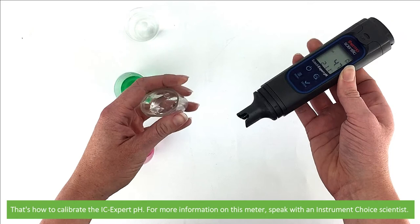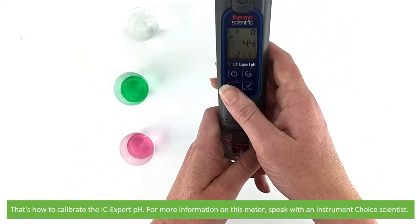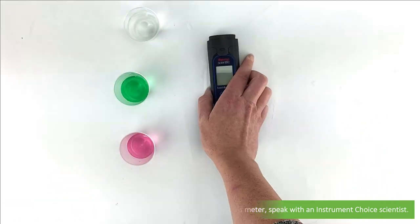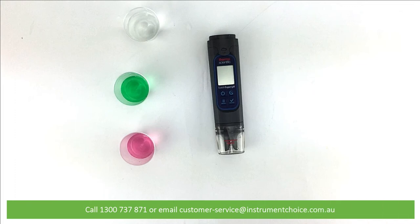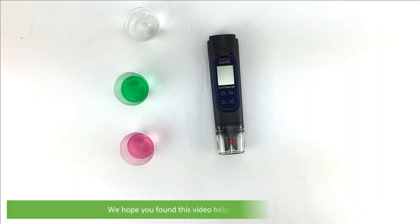And that's how to calibrate the IC Expert pH. For more information on this meter, speak with an Instrument Choice scientist. Call 1300 737 871 or email customer-service@instrumentchoice.com.au. We hope that you found this video helpful. Thanks for watching!